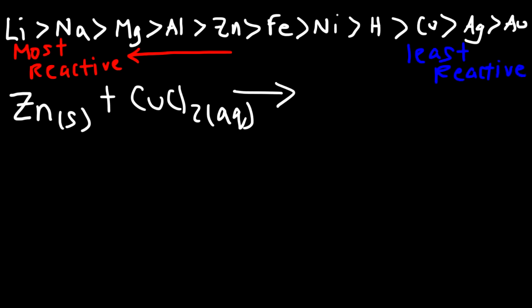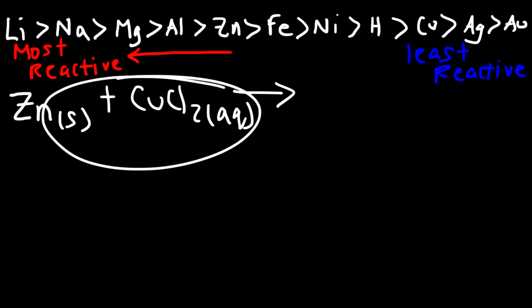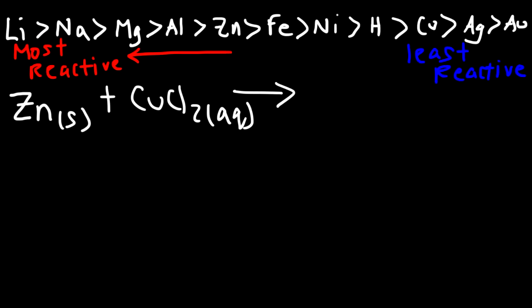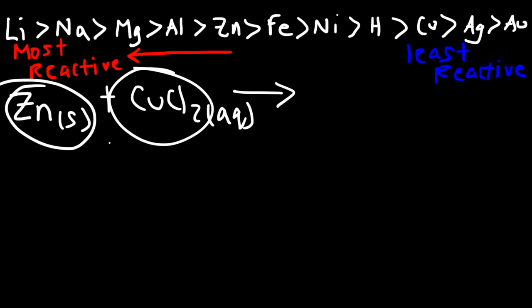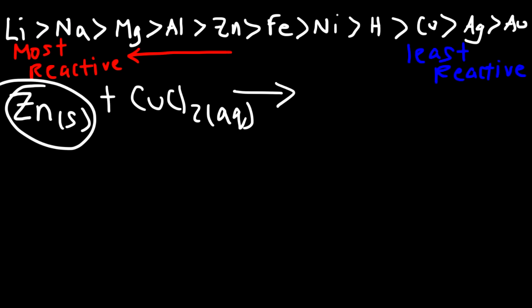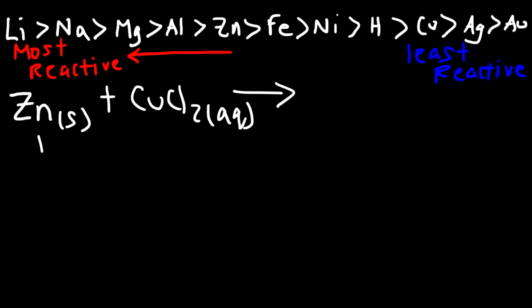So now let's go back to the question we're dealing with. How can we use the activity series to find the answer? You need to ask yourself: can solid zinc metal displace the copper in the aqueous solution? Is zinc metal stronger than copper? Looking at what we have, zinc is to the left of copper, so zinc is stronger than copper, and the reaction will proceed.